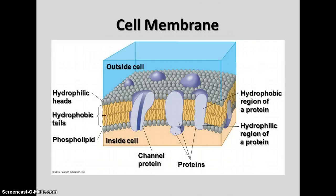A diagram shows the general structure of the cell membrane with hydrophilic heads facing outward, hydrophobic tails in the middle, and different proteins embedded in the surface. Some proteins are channels or tubes that allow things to pass through, and others are recognition proteins. We'll talk more about cell membranes in another week or so.